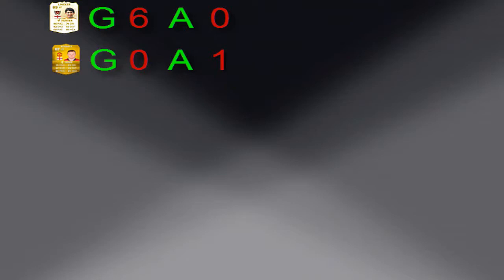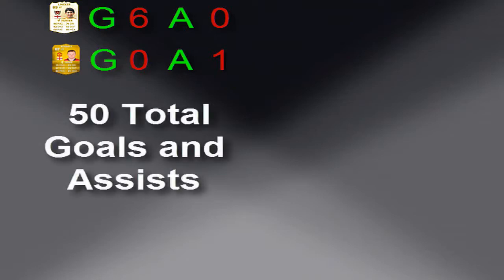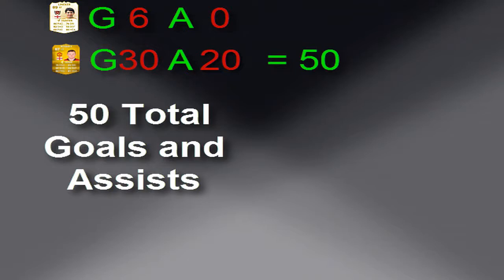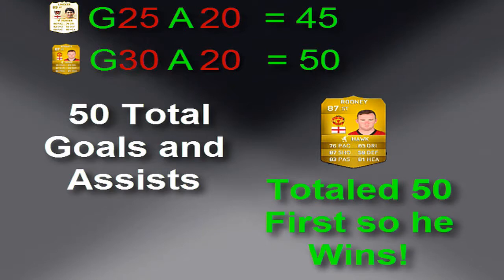We're on episode 3 now, so Lineker's on 6 goals — it will start with him on 6 because it's a series and he's accumulated those goals up to now. The ultimate aim is to get 50 total goals and assists. So say Rooney got 30 goals and 20 assists, that equals 50. As soon as either Lineker or Rooney totals 50 goals and assists, the series will end.